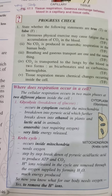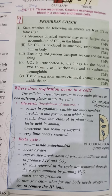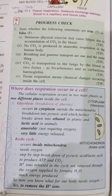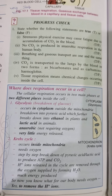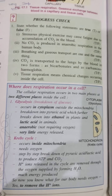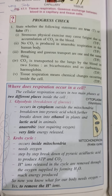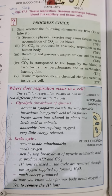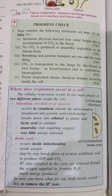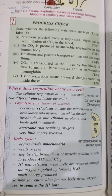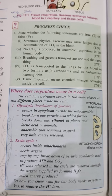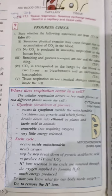Cellular respiration has two phases occurring in two different places. One is glycolysis and another is the Krebs cycle. Glycolysis occurs in the cytoplasm outside the mitochondria. It breaks down into an organic acid called pyruvic acid, which further breaks down into ethanol in plants and lactic acid in animals. It is an anaerobic part and very little energy is released.